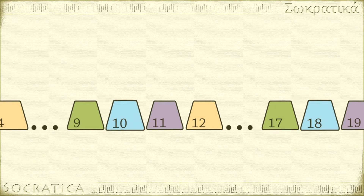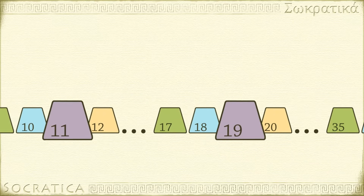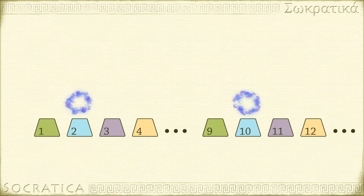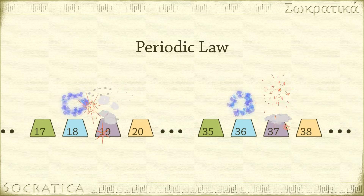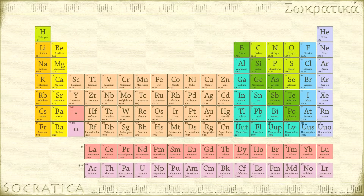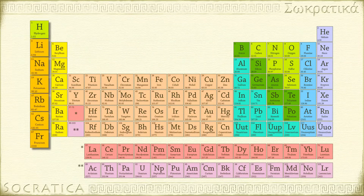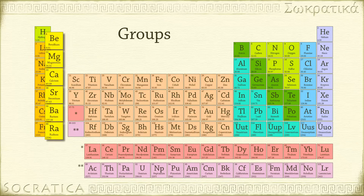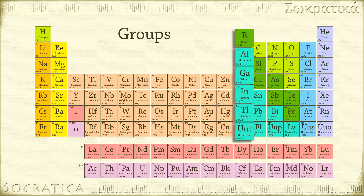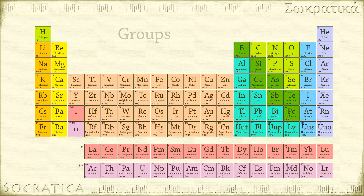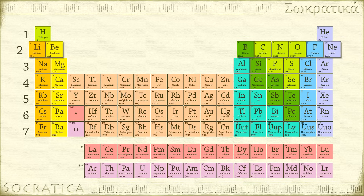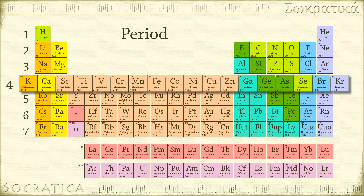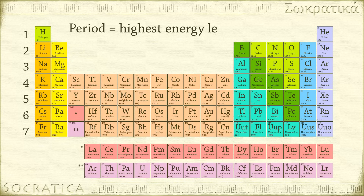There is a periodicity, or a repeating, of certain characteristics. For example, every so often an inert gas appears, and right next to it will be an element that reacts violently with water. This periodic repetition is known as the periodic law, and it is the basis for organizing the elements into columns. A vertical column of elements is called a group, or a family. The elements in a group have similar chemical properties because they have similar valence electron configurations. There are seven horizontal rows in the periodic table called periods, and each row corresponds to a different energy level occupied by electrons.